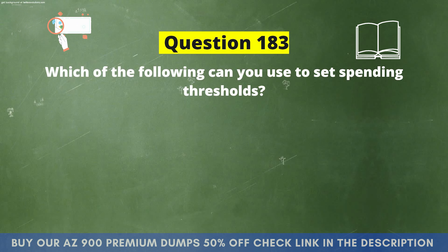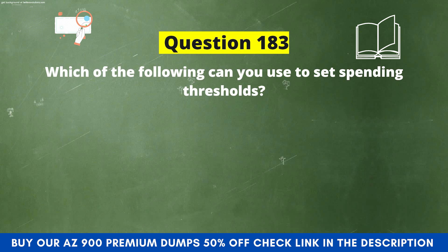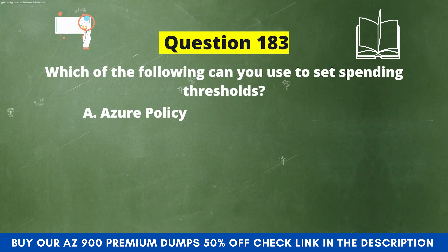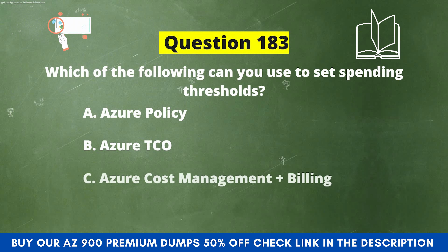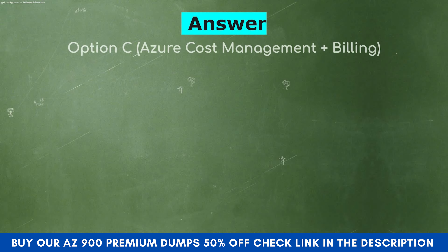Question 183: Which of the following can you use to set spending thresholds? The options are: A) Azure Policy, B) Azure TCO, C) Azure Cost Management plus Billing, D) Azure Pricing Calculator. The correct answer is option C: Azure Cost Management plus Billing.